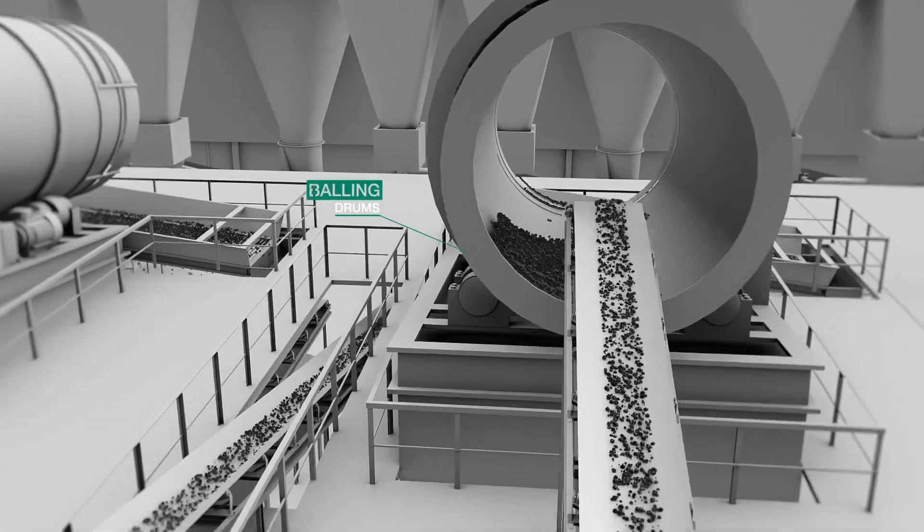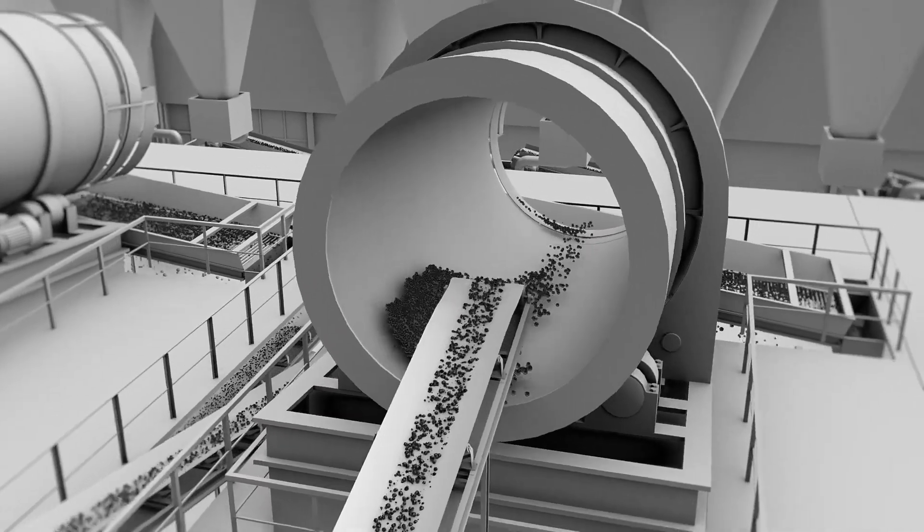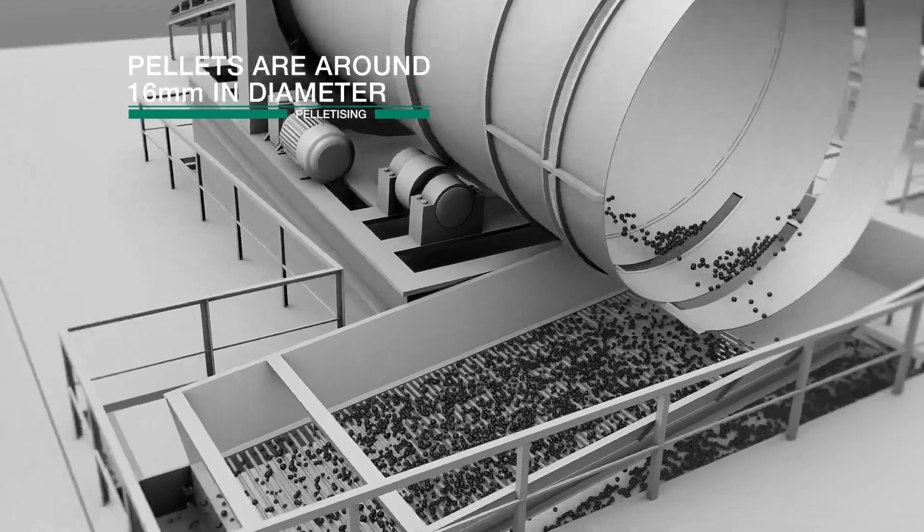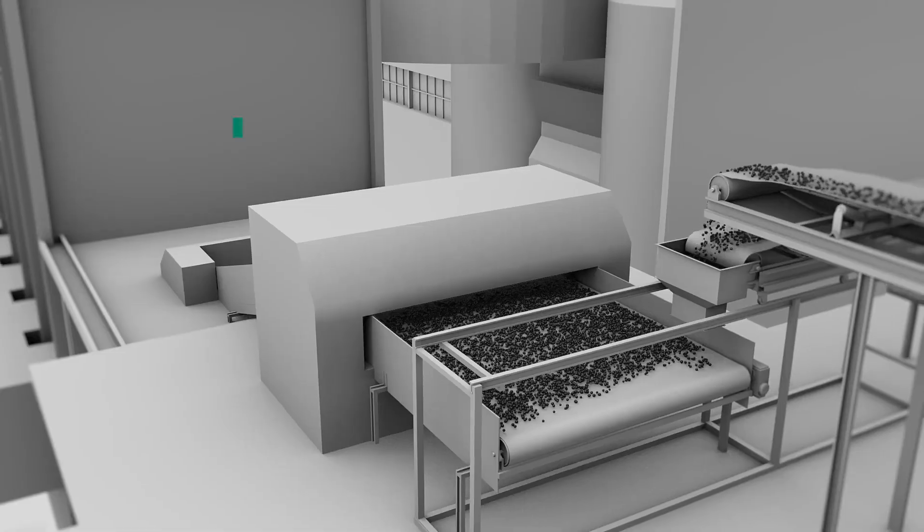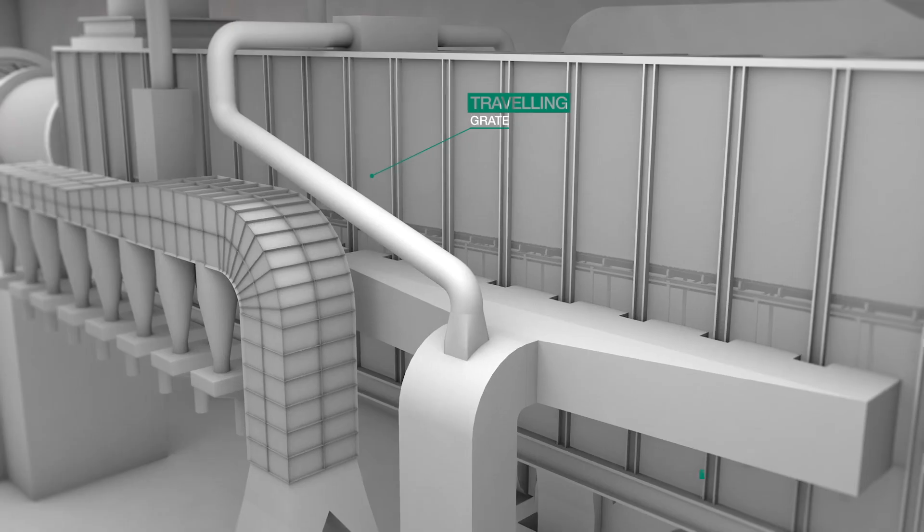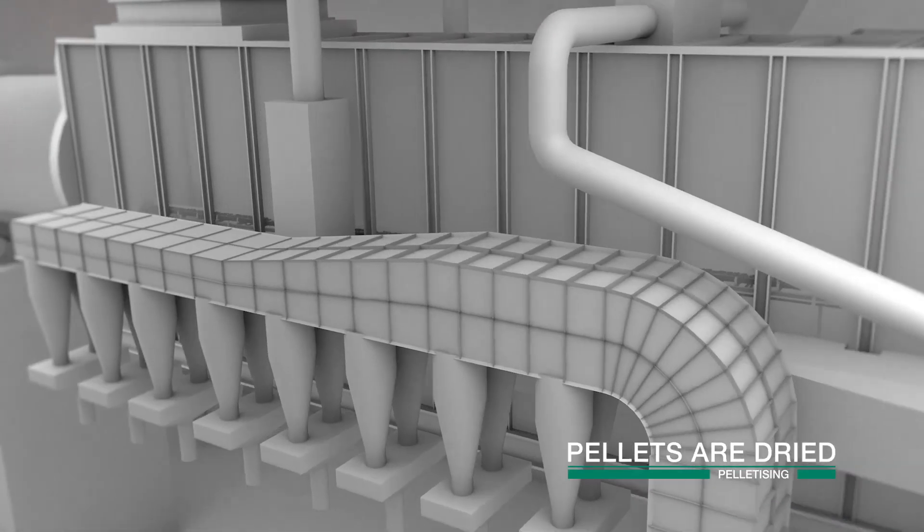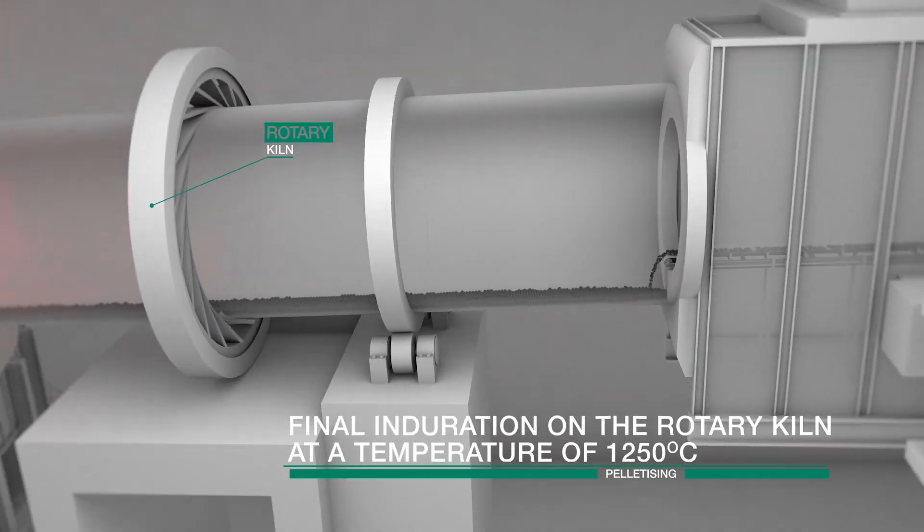Here, it is formed into what is called green pellets. The green pellets are subjected to screening, and they are then sent to a travelling grate, where they are dried before final induration in the rotary kiln at a temperature of 1250 degrees Celsius.